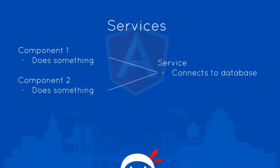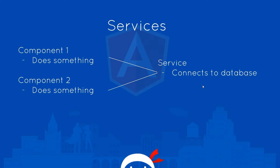Services kind of take this problem away from us. Imagine this scenario: we have one component which does something and a second component which does something else, and they both still want to connect to the database. But instead of writing the code in each component, we centralize the code in a service. Then any component which wants to connect to the database just gets this service — we inject an instance of it into the component. So that's what we're going to look at in this tutorial. We'll create a very simple service first, then later we'll create one that connects to a database.